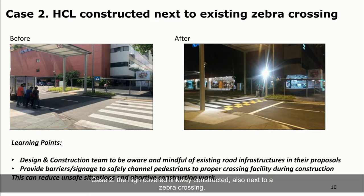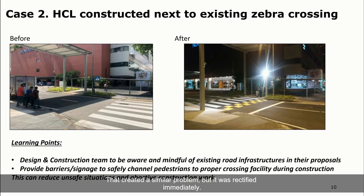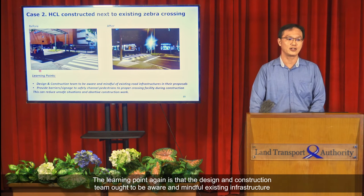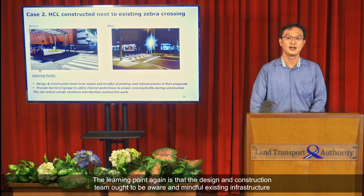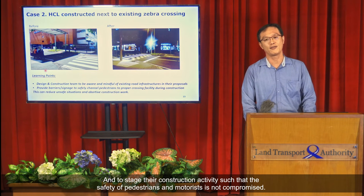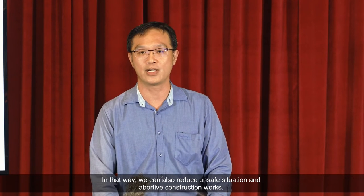Case 2: an HCL was constructed next to an existing zebra crossing in a similar situation. The HCL was completed; however, the zebra crossing was not relocated fast enough, resulting in pedestrians crossing under the HCL instead of at the zebra crossing. It was rectified immediately. The learning point again is that the design and construction team must be aware of existing infrastructure, especially at the design phase, and stage construction activities so that pedestrian and motorist safety is not compromised — reducing unsafe situations and abortive construction works.